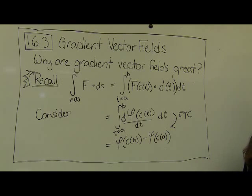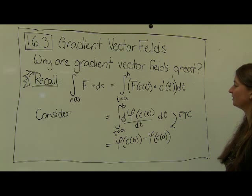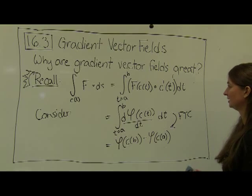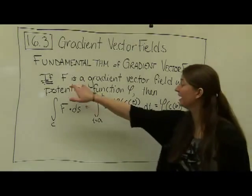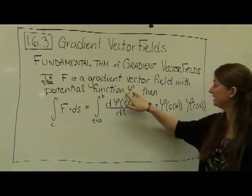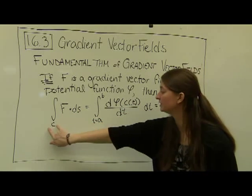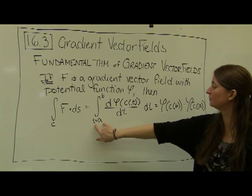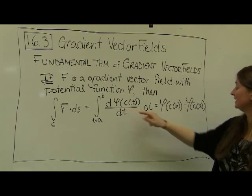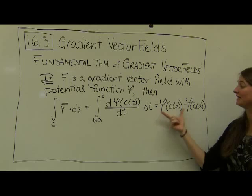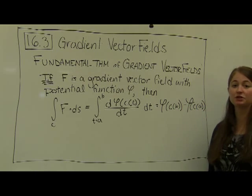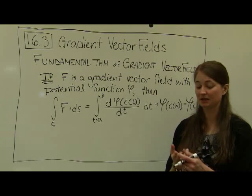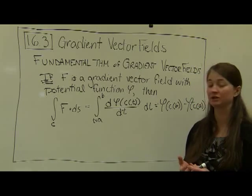This leads us to our fundamental theorem of gradient vector fields. If F is a gradient vector field with potential function phi, then the vector line integral along path c equals the integral from t equals a to b of the derivative of the potential function, which equals phi(c(b)) minus phi(c(a)). You're probably asking two things: what does this mean, and why do I care? We'll answer those in order — first an example, then the geometric implications.